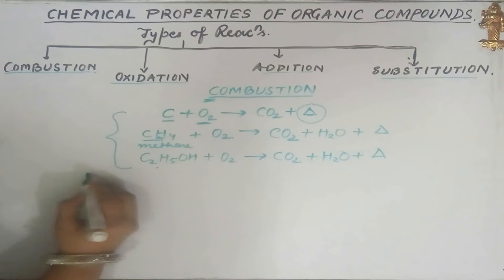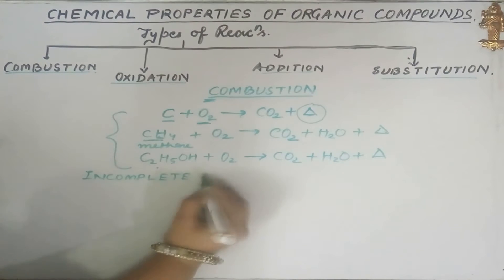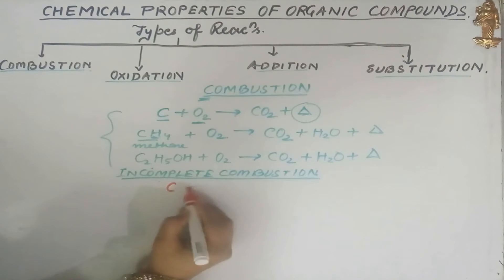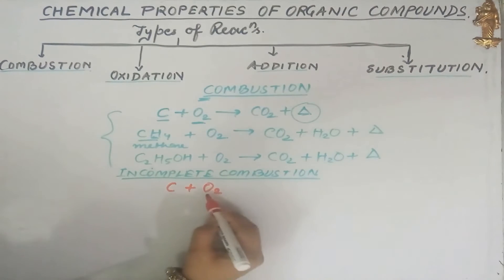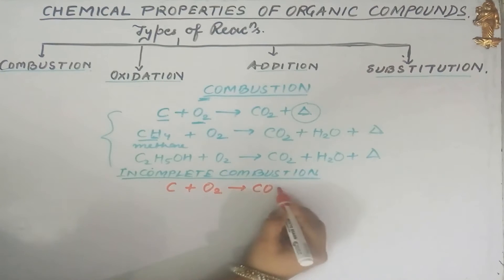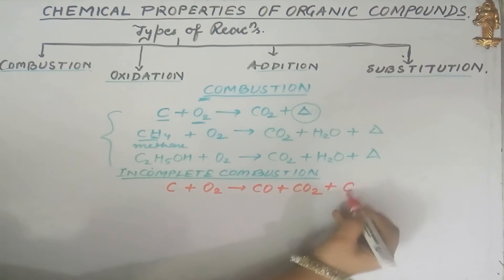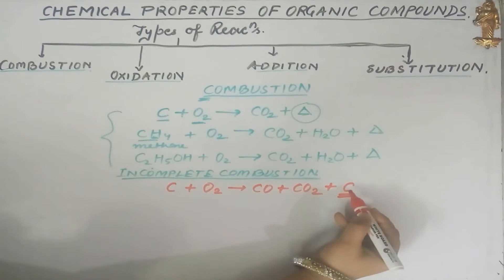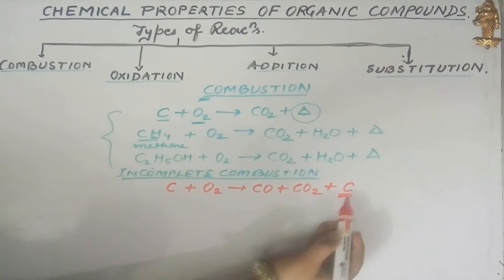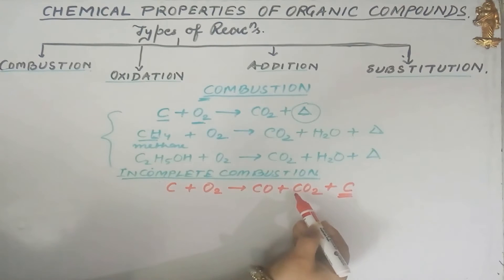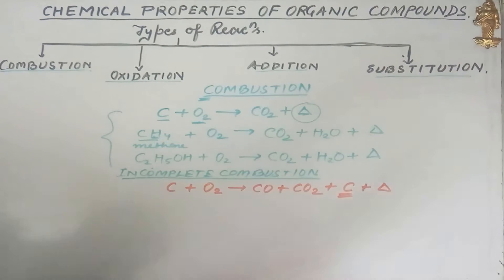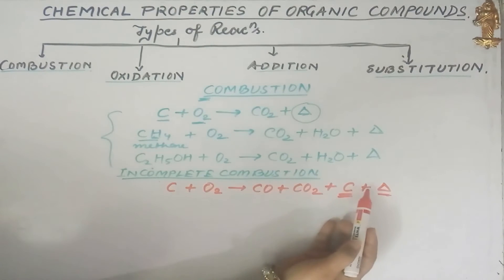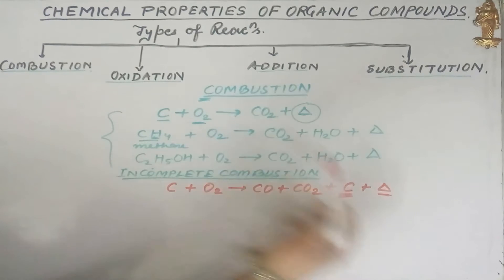Apart from that, there is another concept called incomplete combustion. In incomplete combustion, carbon reacts with oxygen again, but here oxygen is in limited supply. Carbon and oxygen combine to form carbon monoxide, along with some amount of carbon dioxide and some unburnt carbon particles known as carbon black. The energy formed during incomplete combustion is less than that produced during complete combustion.